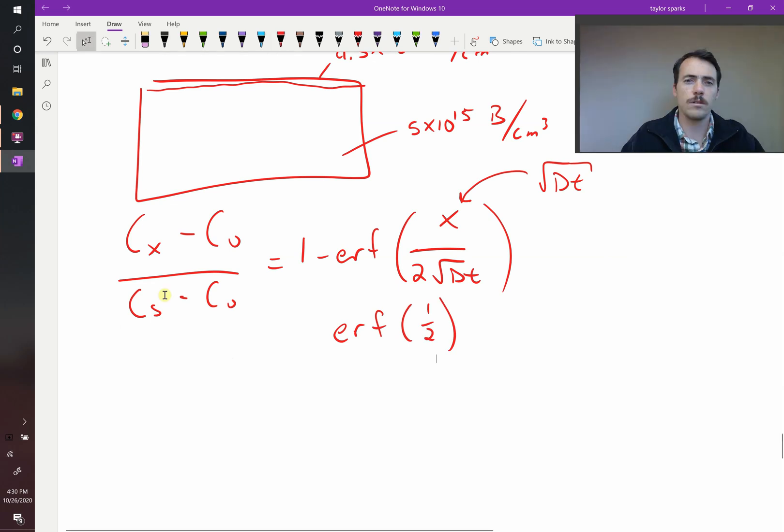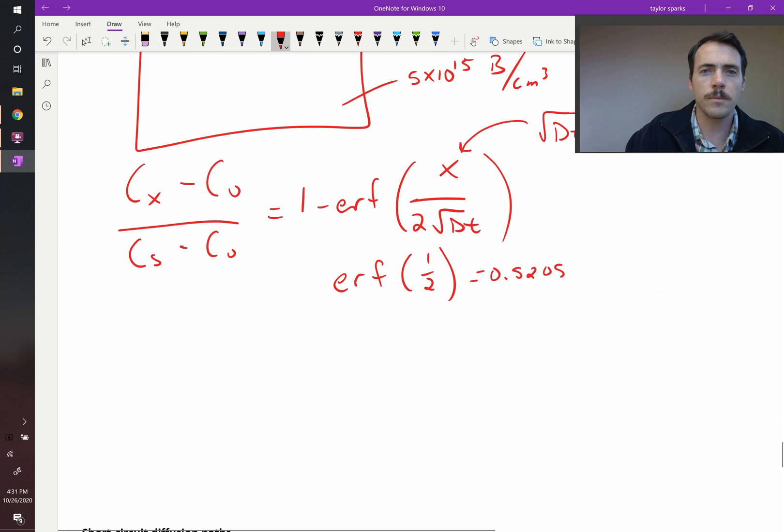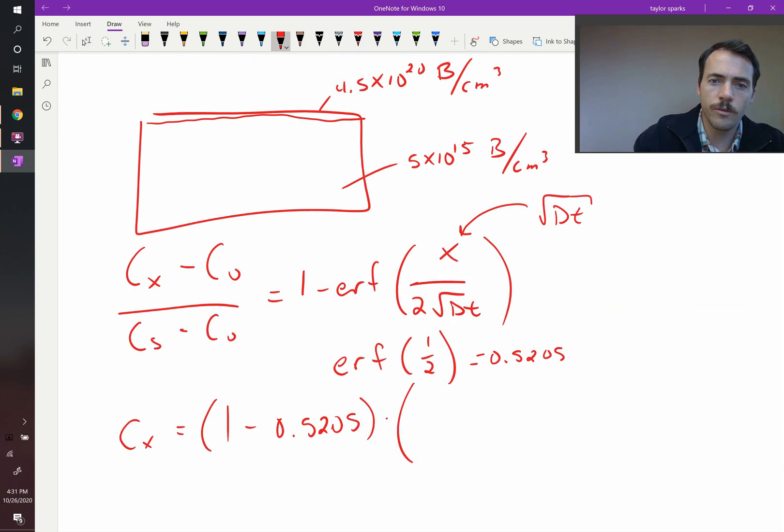Error function of 1 half. So if the error function of 1 half, let's use our table up here. Z is 1 half, so the error function of 1 half is 0.5205. So we're almost there. We can now say that cx, which we're solving for, is going to be equal to (1 minus 0.5205) multiplied by the surface concentration minus the initial. So that's going to be multiplied by 4.5 times 10 to the 20th minus 5 times 10 to the 15th. And then we're going to add to that whole thing our surface concentration, 5 times 10 to the 15th.